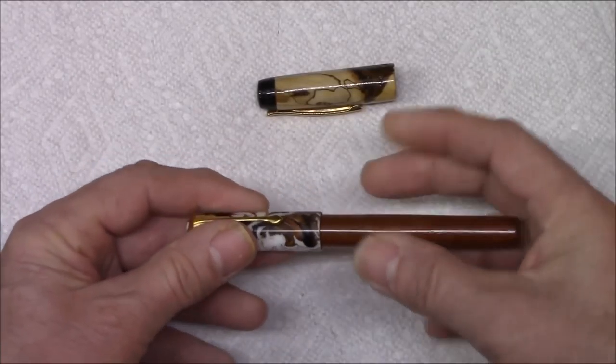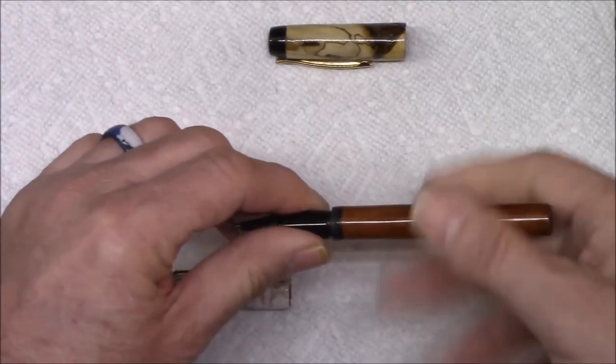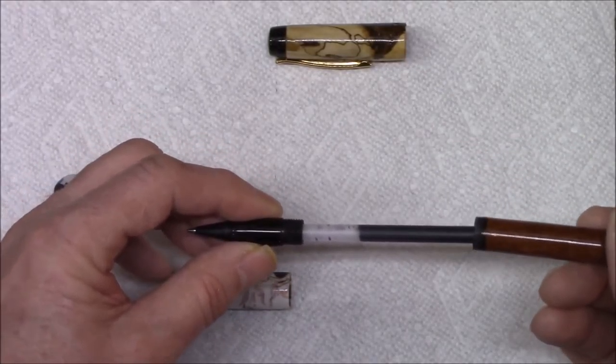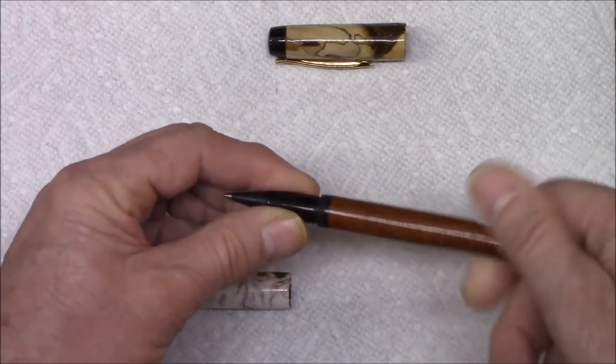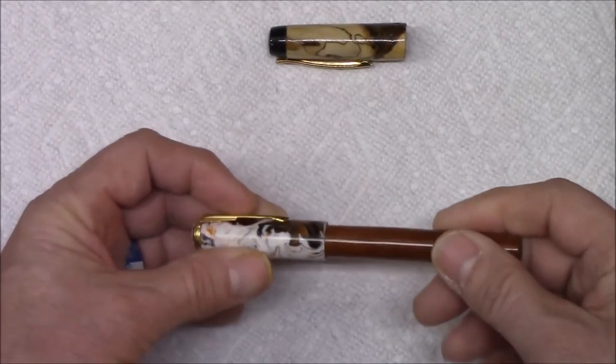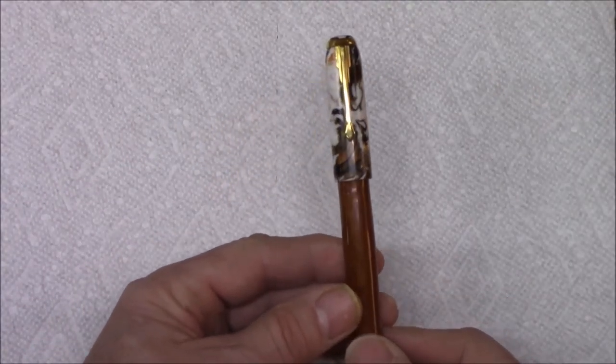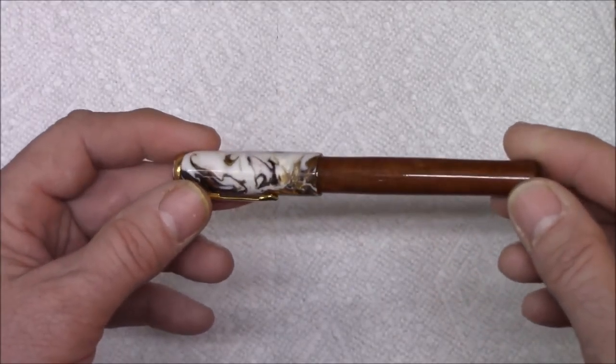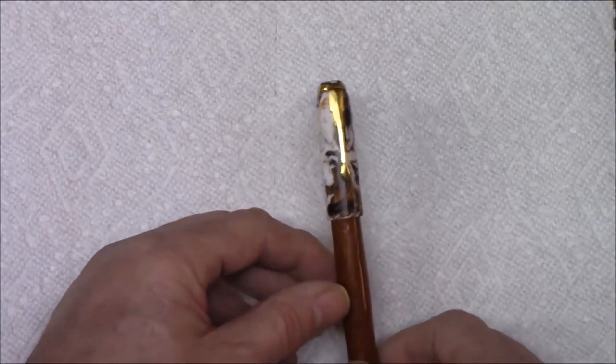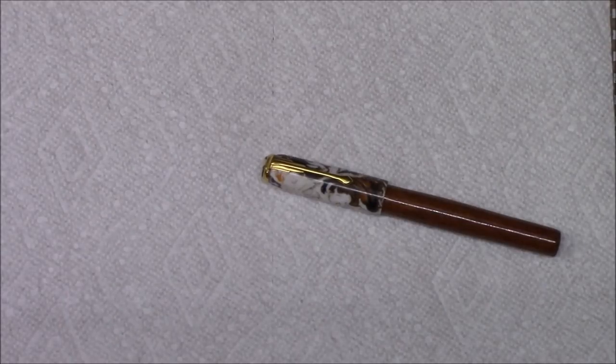But I use these ink cartridges just like in a fountain pen. You can put a converter in it and fill it with your own ink, or you can buy these cartridges. That's what it makes for a nice writing instrument. And I think our chocolate ice blank really looks nice with that mesquite pen body that I like so much. We appreciate you watching, and until next time, everybody be safe.